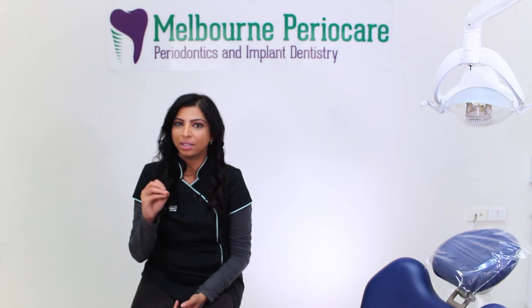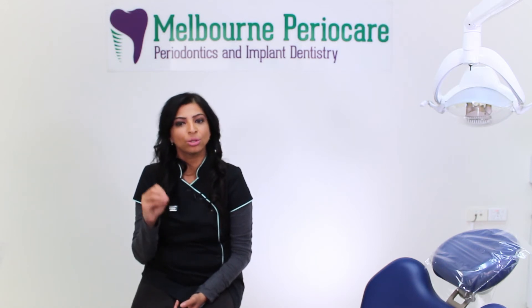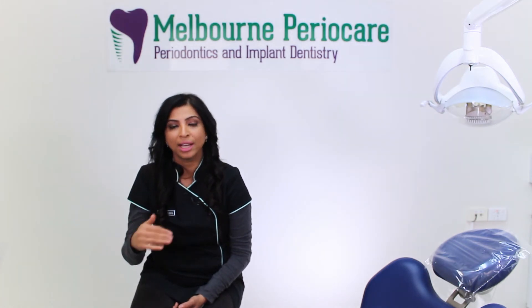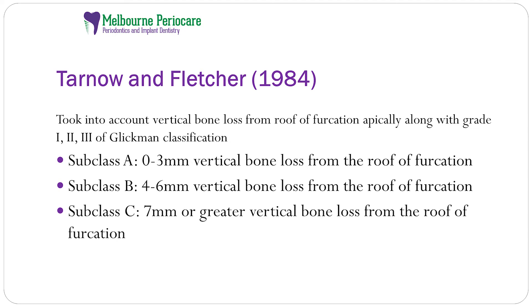Tano and Fletcher in 1984 gave a slightly different classification. They took into account the vertical bone loss from the roof of the furcation apically, along with the grade one, two, and three of the Glickman classification. Subclass A was vertical bone loss from the roof of the furcation up to three millimeters, subclass B was four to six millimeters, and subclass C was seven millimeters or greater.